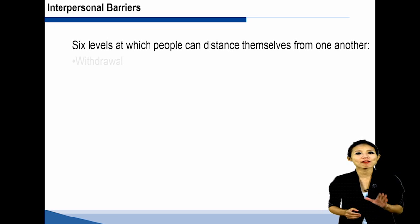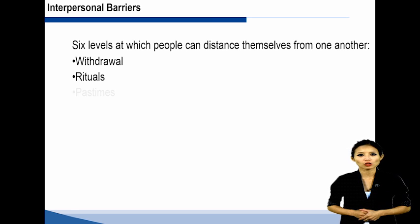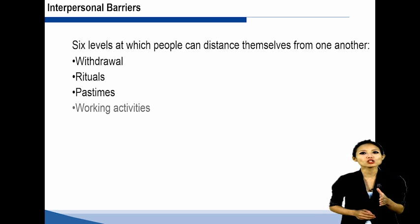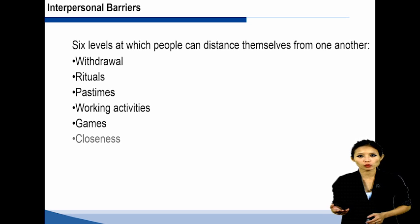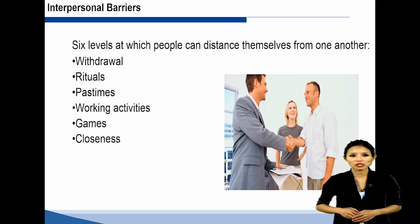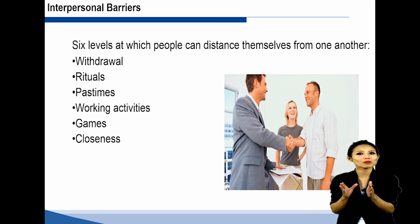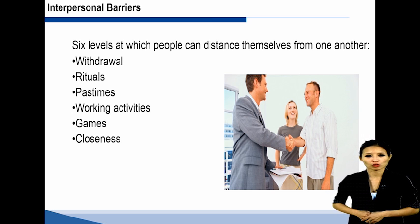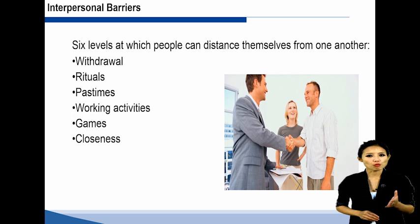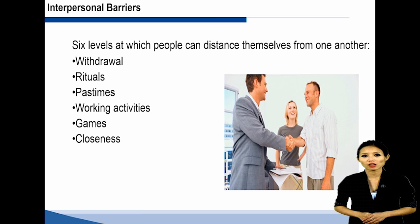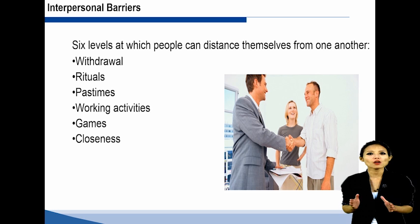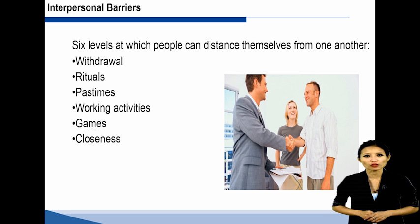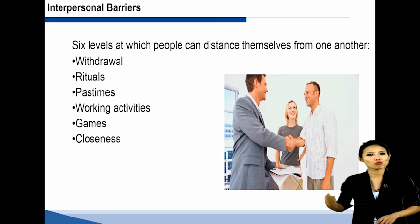Interpersonal barriers: There are six levels at which people can distance themselves from one another. Withdrawal is an absence of interpersonal contact, both a refusal to be in touch and time alone. Rituals are meaningless repetitive routines devoid of real contact. Pastimes fill up time with others in social but superficial activities. Working activities follow the rules and procedures of contact, but no more. Games are subtle manipulative interactions about winning and losing. Closeness is the aim of interpersonal contact, where there is a high level of honesty and acceptance of yourself and others.